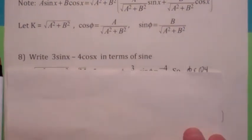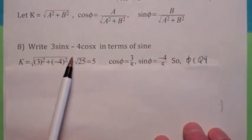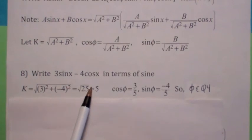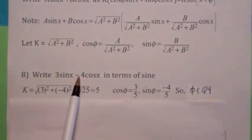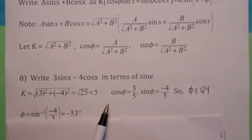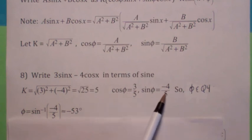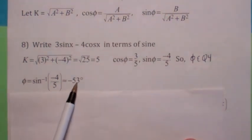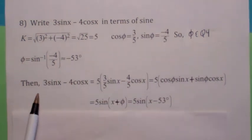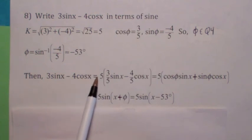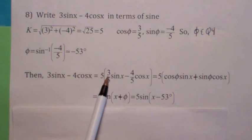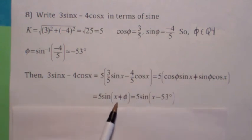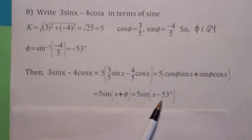Suppose you have 3 sine of x minus 4 cosine of x and want to write it just in terms of sine. Find k: the square root of 3 squared plus negative 4 squared, which is 5. So cosine phi equals 3 over 5, and sine phi equals negative 4 over 5. Phi is in quadrant 4 because cosine is positive and sine is negative. Taking the inverse sine of negative 4 fifths gives negative 53 degrees. Putting it all together: 3 sine x minus 4 cosine x equals 5 sine of x plus phi, where phi is negative 53 degrees. Pretty sneaky!